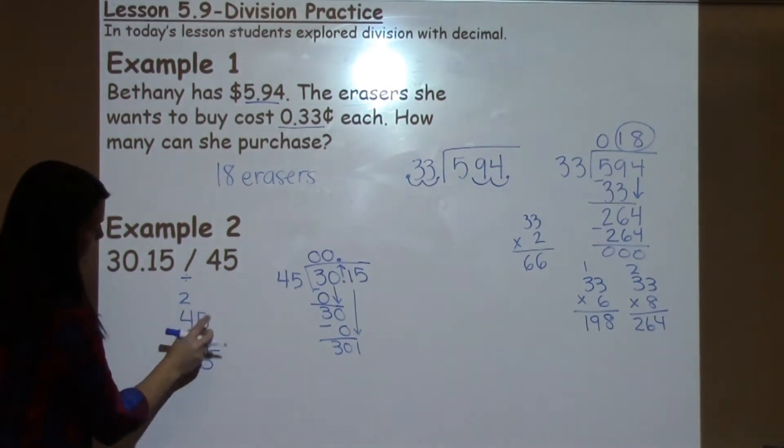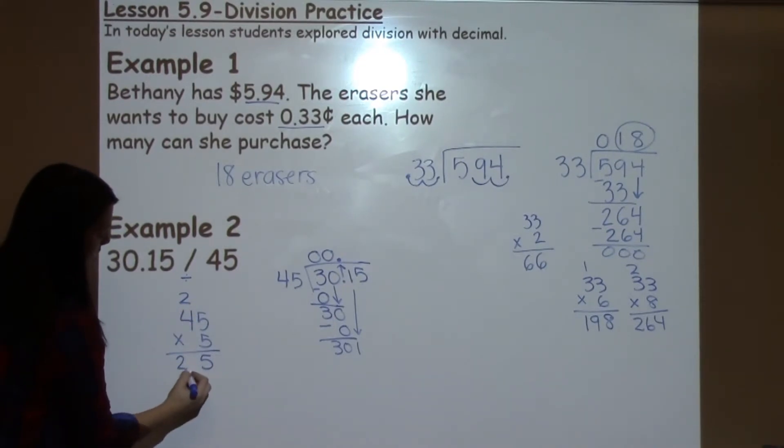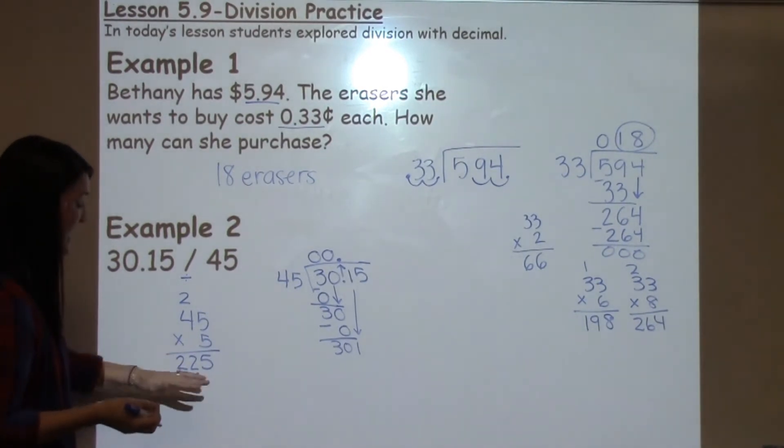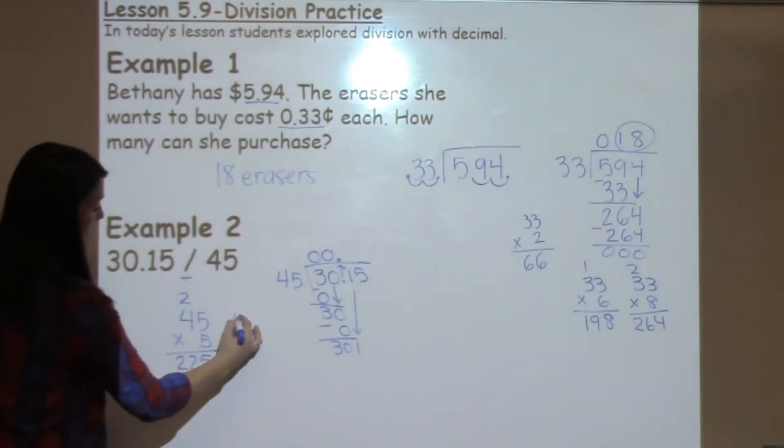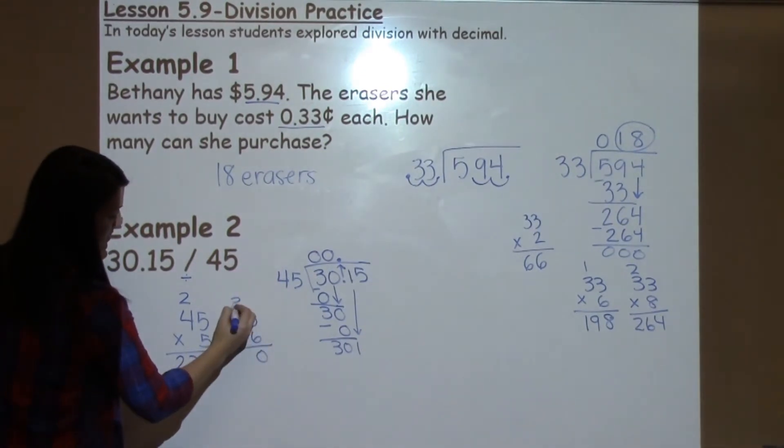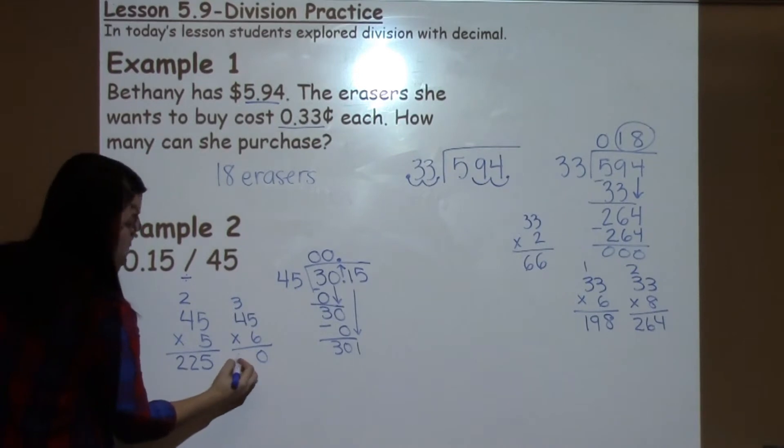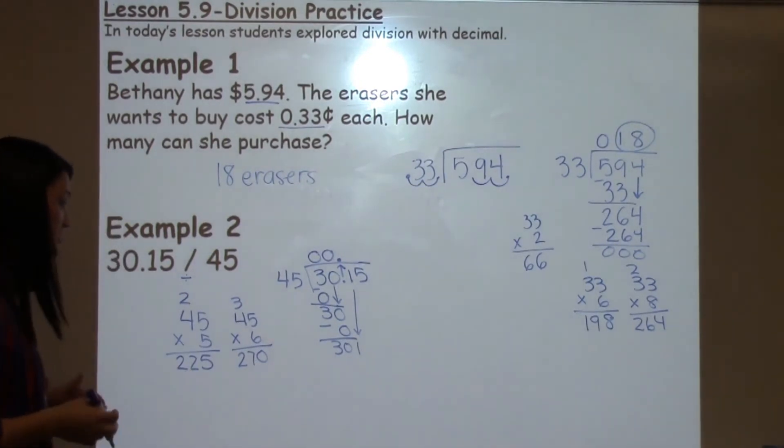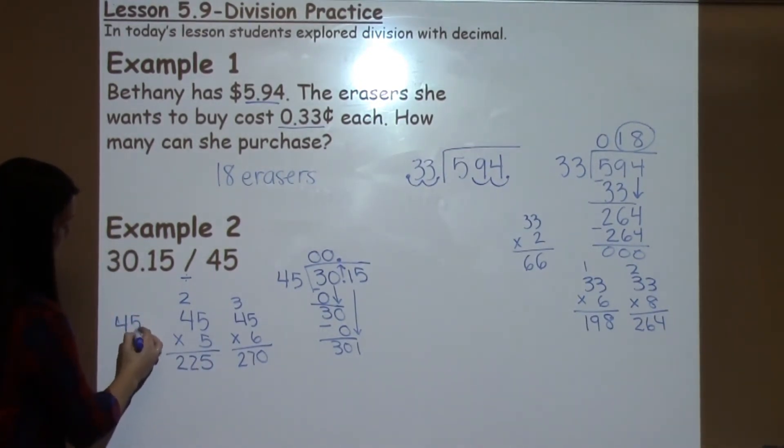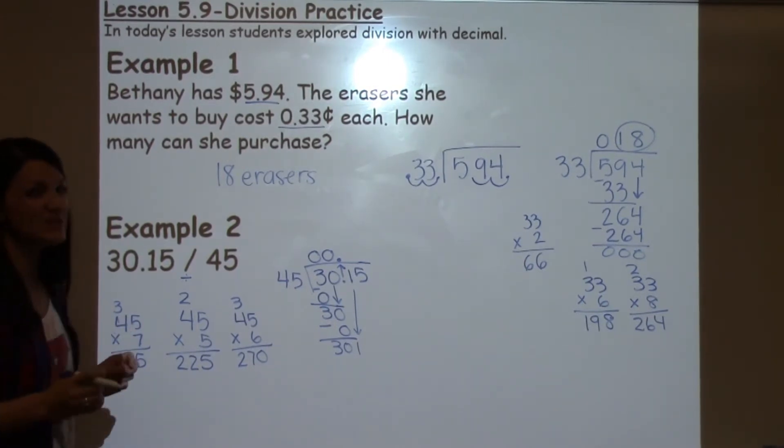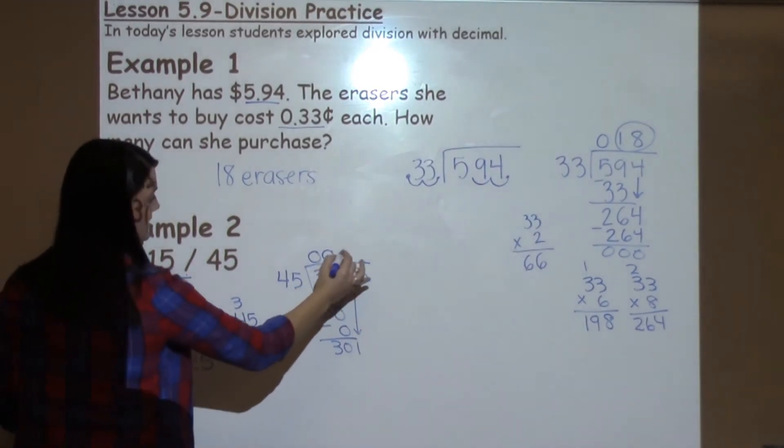I'm going to multiply 45 times 5 to see how close I can get to 301. 5 times 5 is 25, 5 times 4 is 20, plus 2 is 22. This didn't give me exactly what I needed, but it did give me a very good indicator that I'm pretty close to 301, but maybe I can get just a little bit closer. So I'm going to try 45 times 6. 6 times 5 is 30, 6 times 4 is 24, plus 3 is 27, for an answer of 270. Now I'm inching my way, I'm getting even closer, but your student might want to check out 45 times 7 just to make sure. 7 times 5 is 35, 7 times 4 is 28, plus 3 would be 31, which would give me just a little too much. So my best answer is 6.